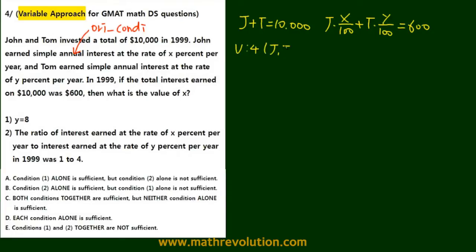There are four variables, j, t, x, and y, and there are two equations given to us right now here. Since we need the same number of equations, we need two more equations to solve this, and this makes c the likely answer, because condition one and condition two each gives us an equation.